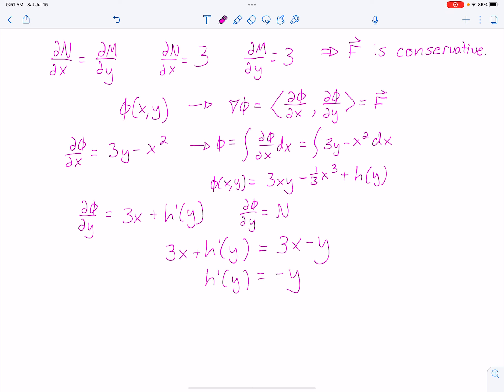Notice that we only have terms of Y. If I have terms of X, then I probably did something wrong. We dealt with all the X's. To get from H prime to negative Y, we just integrate. I'm going to go ahead and do that. That's negative one-half Y squared plus now we get a C.